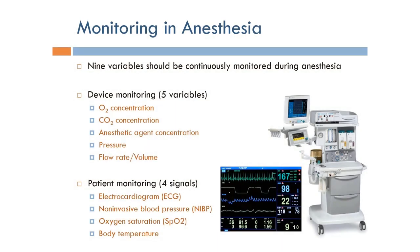In order to ensure that the patient is safe during anesthesia, we have to have monitoring in anesthesia, and we have to monitor nine variables continuously. These nine variables consist of five for device monitoring and four for patient monitoring.